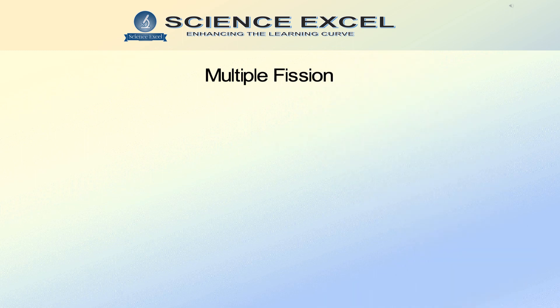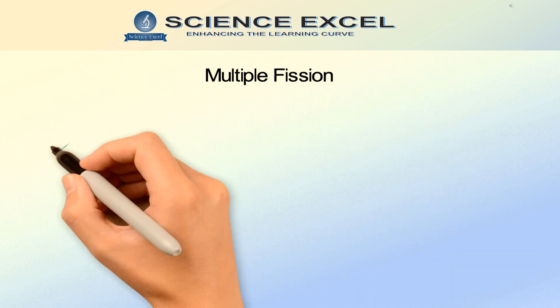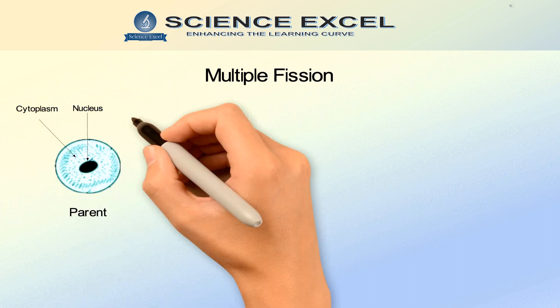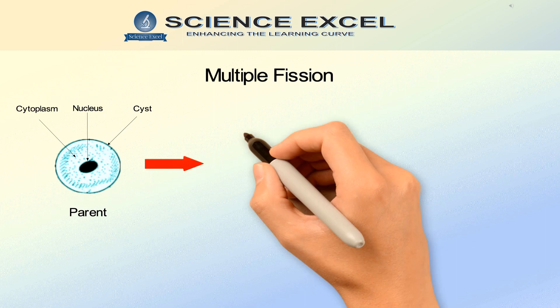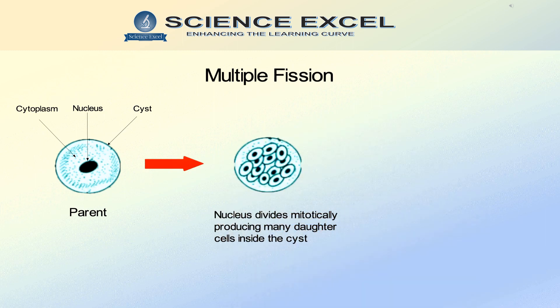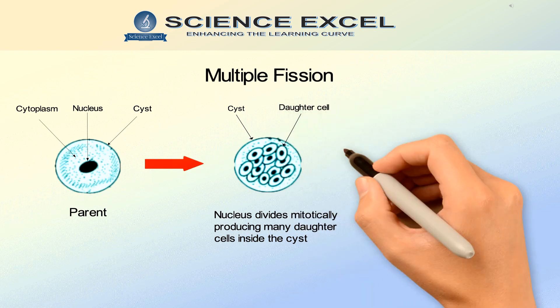Multiple fission is a process where, unlike binary fission, several individuals emerge from a single cell. This kind of division takes place during unfavourable conditions. The nucleus divides mitotically to produce a large number of daughter nuclei. Each nucleus, along with a little bit of cytoplasm, forms a membrane around it.